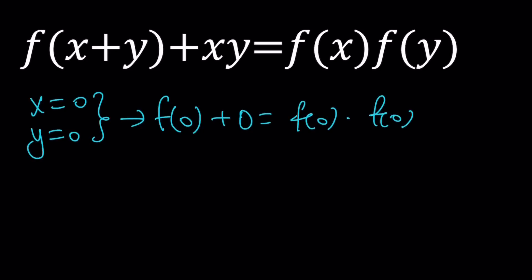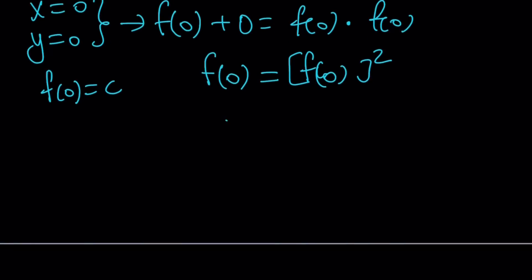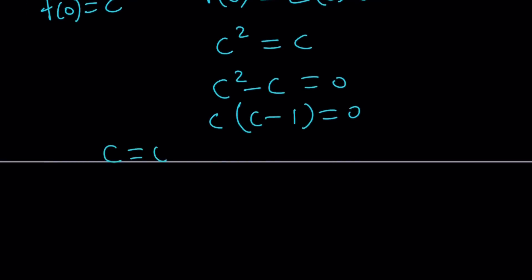f of 0 plus 0 is the same as f of 0 because 0 is the identity for addition. And f of 0 multiplied by itself gives us f of 0 squared. Now f of 0 is a constant, so let's call it c. We get c squared equals c. Put the c on the left, factor, and you'll get the solutions. So c is either 0 or 1.